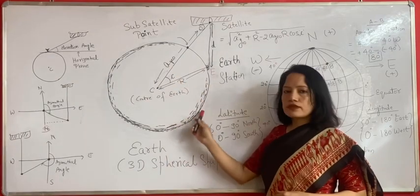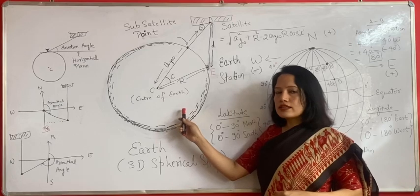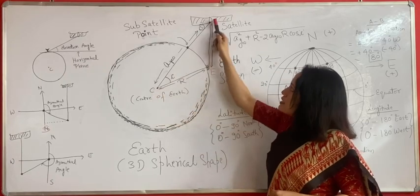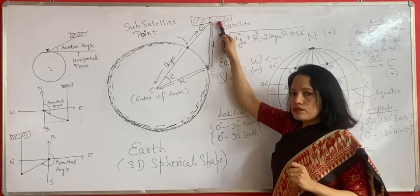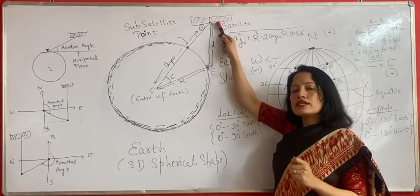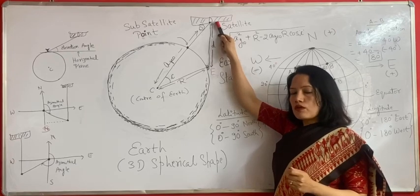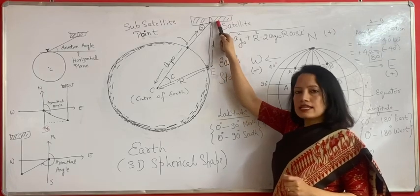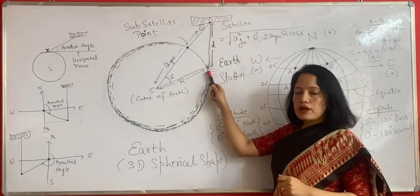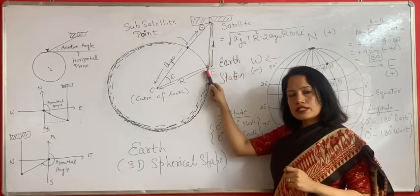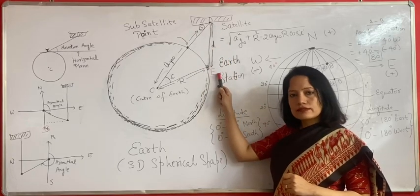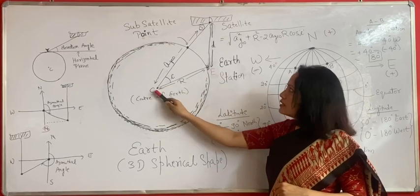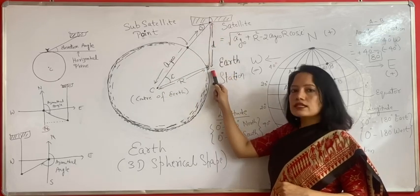This is the diagram of Earth. Earth is a sphere, so let us imagine a sphere. This is the centre of the Earth. This is the satellite, and let us assume that this satellite is in a geostationary orbit. It can be in a geosynchronous orbit or any other orbit, but for simplicity we assume it is geostationary. This point represents the Earth station which communicates with the satellite from the Earth. So we have three points: C which is centre of the Earth, S which is the satellite point, and E which is the Earth station.